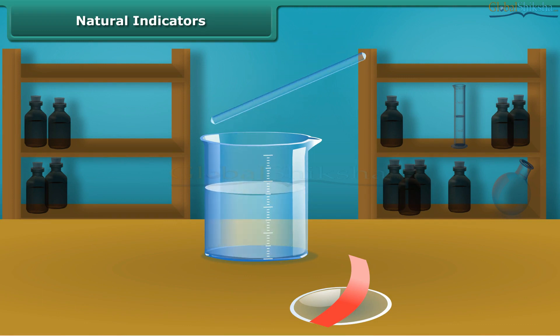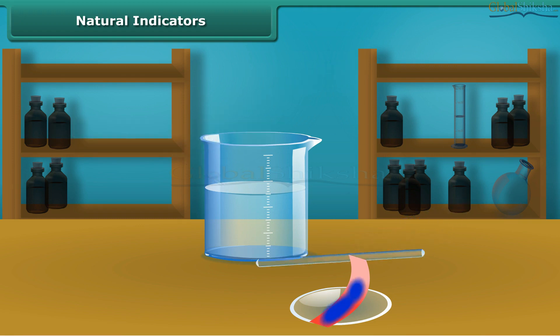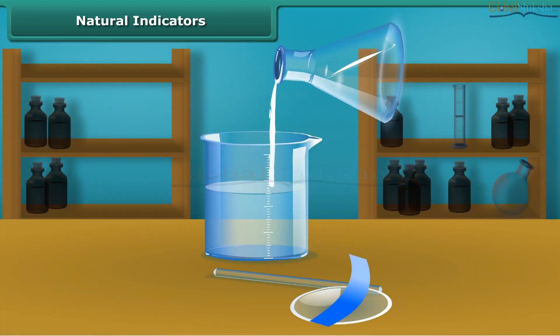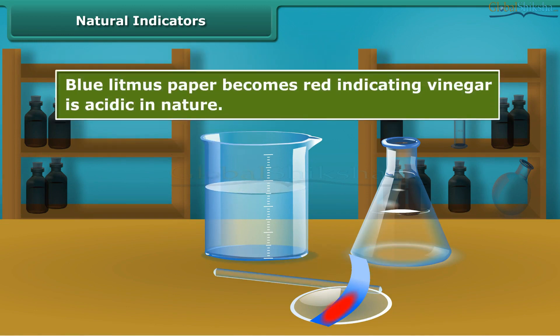Dip a clean stirring rod into the baking powder solution and then touch the wet stirring rod to red litmus paper. Red litmus paper turns blue, indicating that the baking powder solution is alkaline in nature. Again, dip a clean stirrer into the vinegar solution and put one drop on blue litmus paper. Blue litmus paper becomes red, indicating vinegar is acidic in nature.